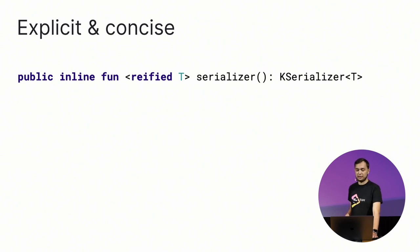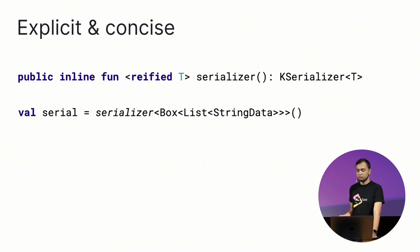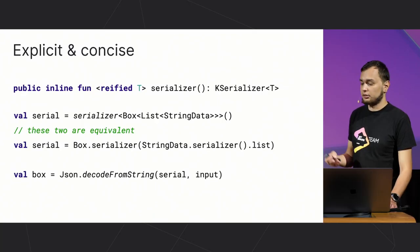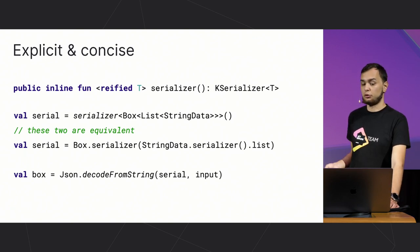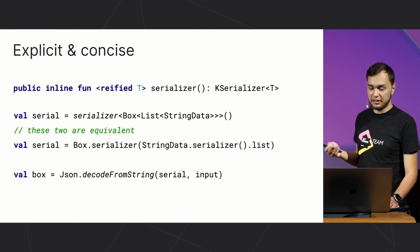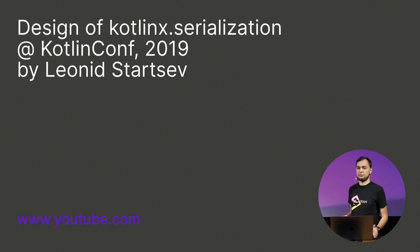We can use this function and write our own serializer function, which is provided in Kotlinx Serialization, to create a serializer for boxes of lists and so on. A KSerializer is an entity that knows how to serialize and deserialize a particular class. Creating a serializer from a type token is equivalent to creating a serializer by hand and using it in any of the decode functions. If you want to find out more about what KSerializer is and the internal architecture of Kotlinx Serialization, you can watch my talk called 'Design of Kotlinx Serialization' from KotlinConf 2019, available on YouTube.